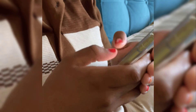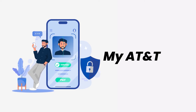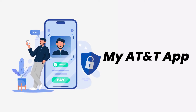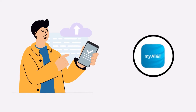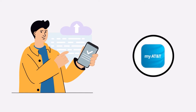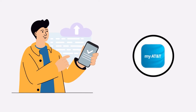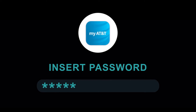It might be possible that you're not able to log in due to a connectivity issue, so first you need to make sure you have a strong and stable internet connection. Do a quick test by opening an app that runs on the internet other than the AT&T app and check if it's working. You can also try switching from Wi-Fi to mobile data and vice versa.